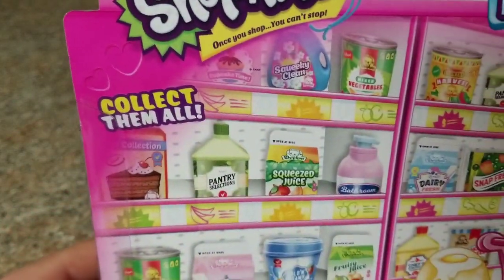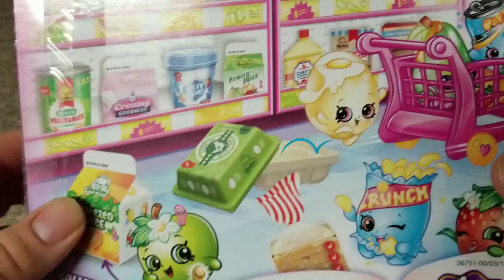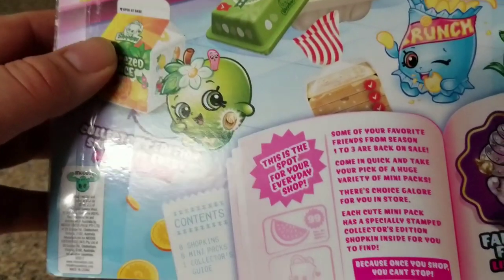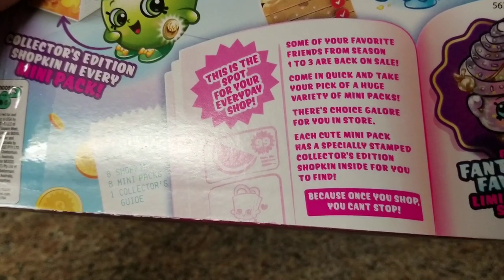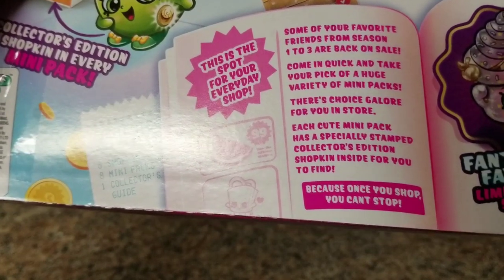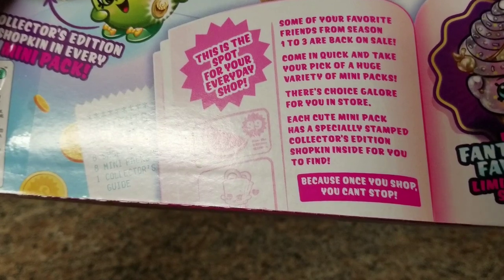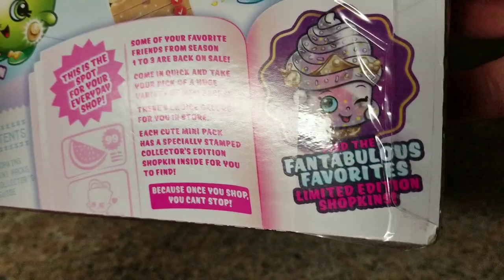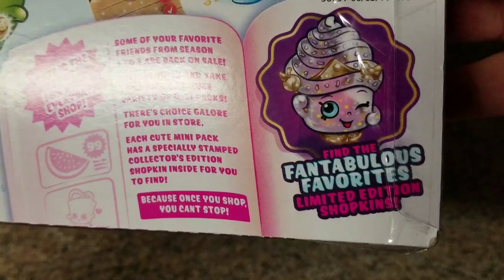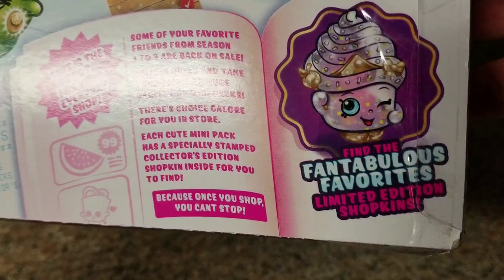Alright, collect them all. As you see, got a whole pantry. We're going shopping here. This is the spot for your everyday shop. Some of your favorite friends from season one to three are back on sale. Come in quick and take your pick of a huge variety of mini packs. Alright, let's see what we got here. It says find the fantabulous favorites limited edition Shopkins.